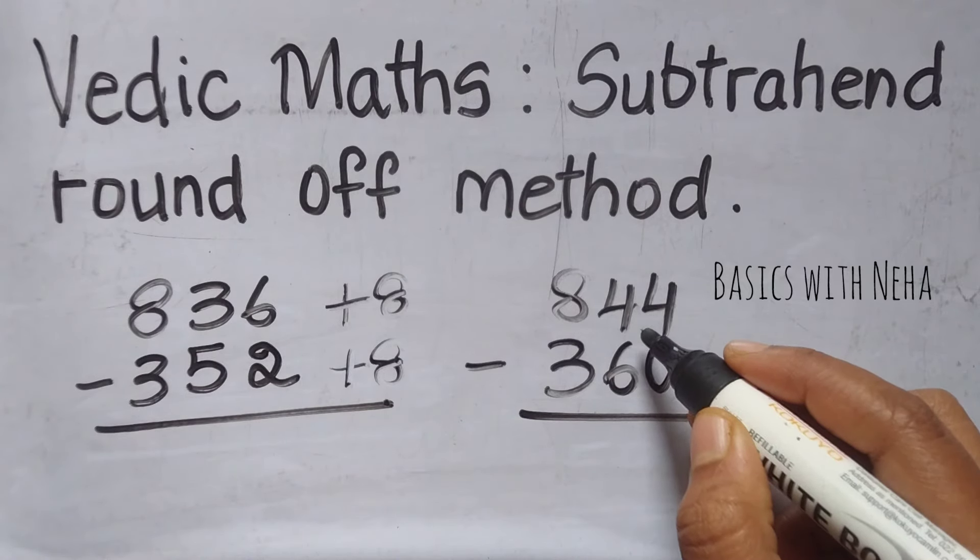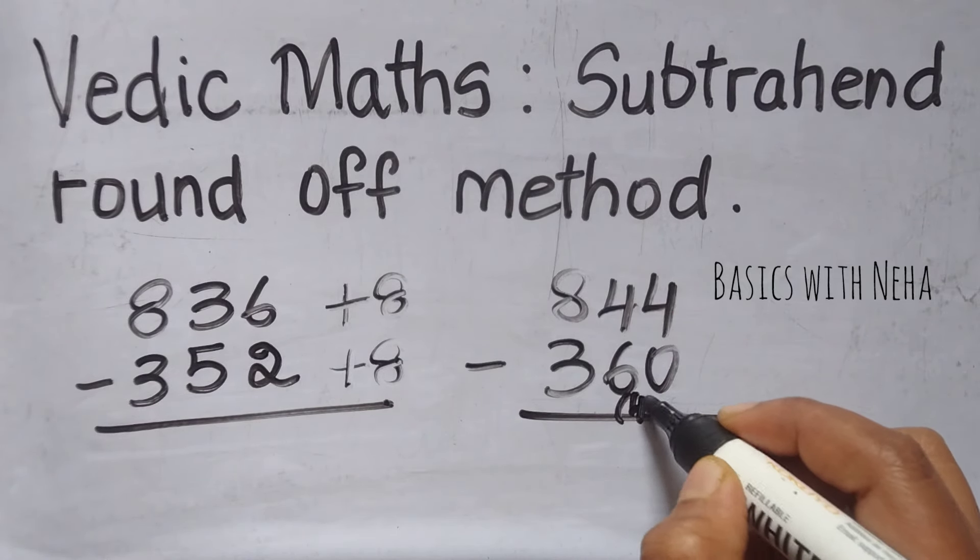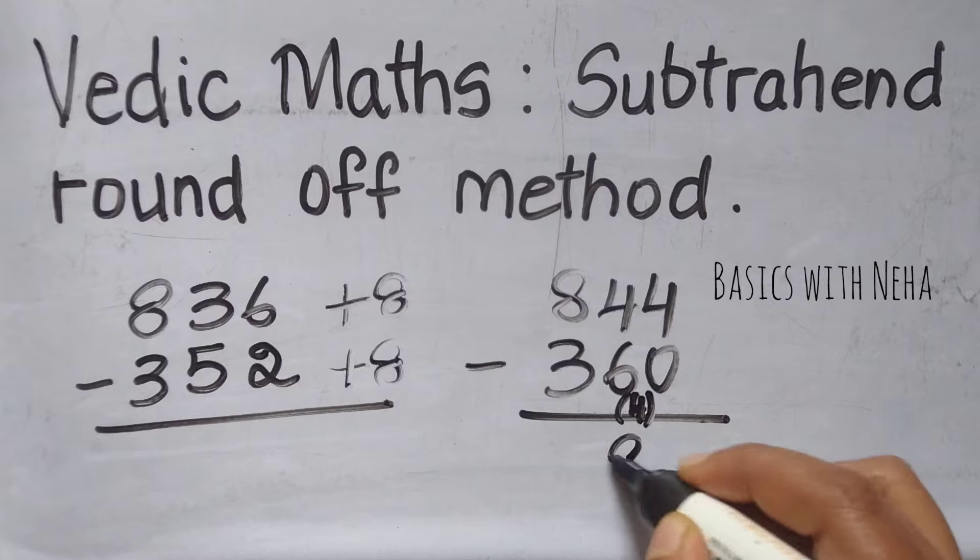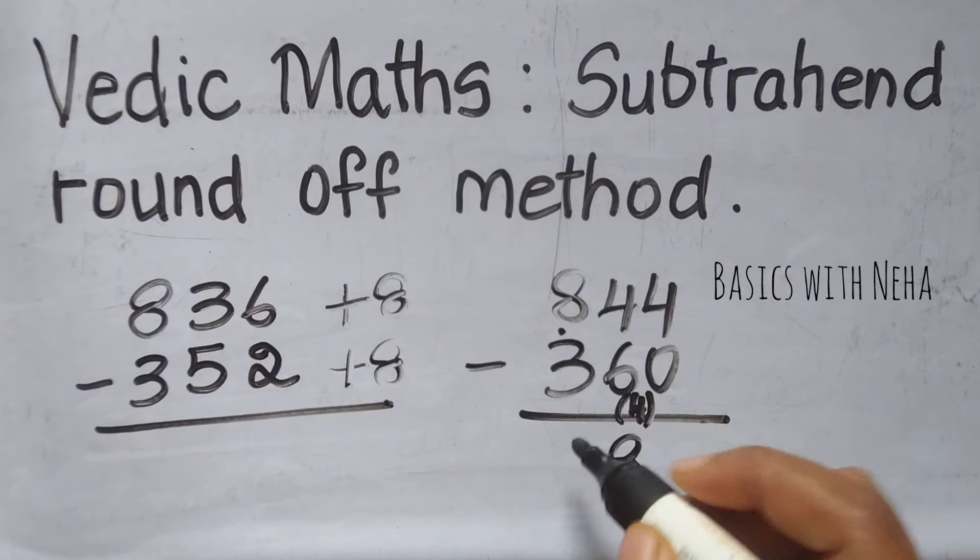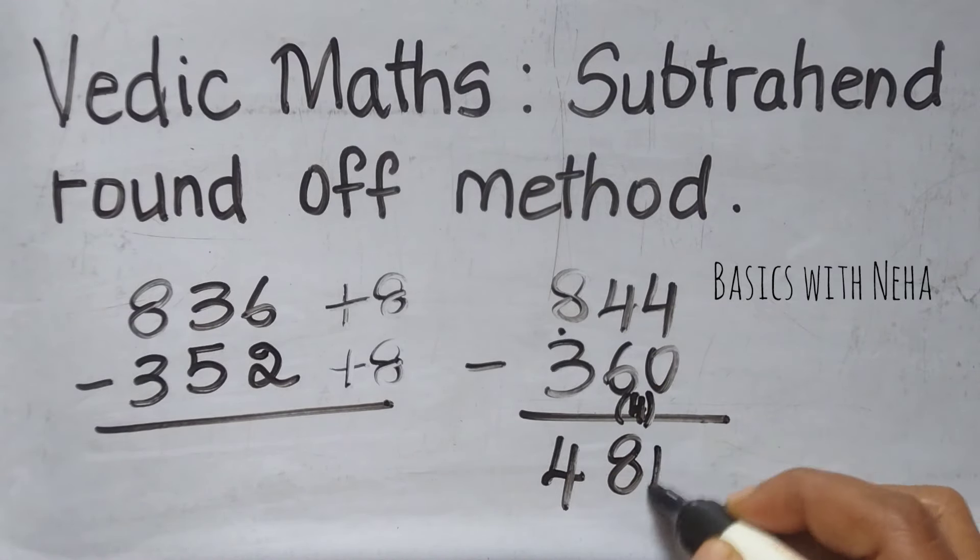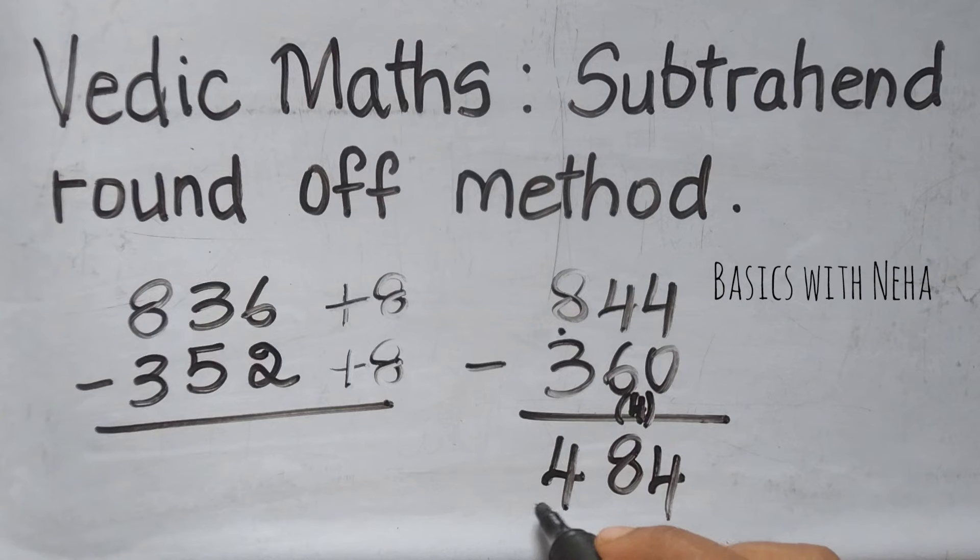So again, to subtract this, I can use the dot method. I'll use the complement of 6, which is 4. It'll become 8. I'll put a dot. 8 minus 4 will be 4. And 4 comes as it is down. So my final answer will be 484.